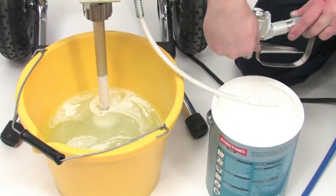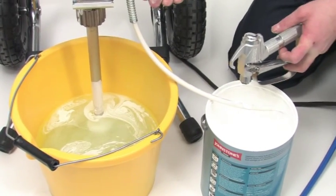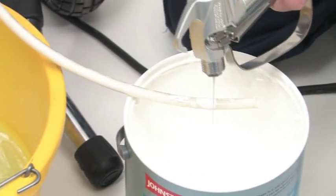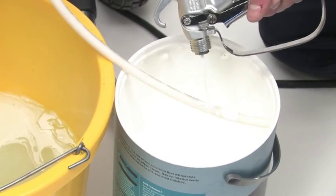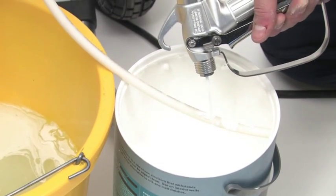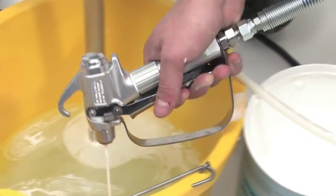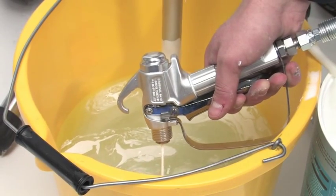Release the safety trigger catch on the spray gun and squeeze the trigger pointing the gun into the tin of paint. When water comes out of the spray gun, move the gun across to the waste bucket, keeping the trigger squeezed until relatively clean water comes out.